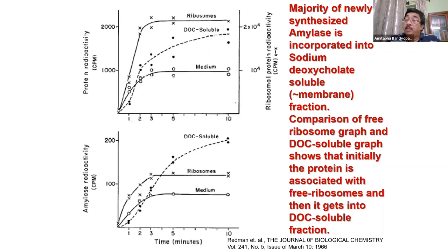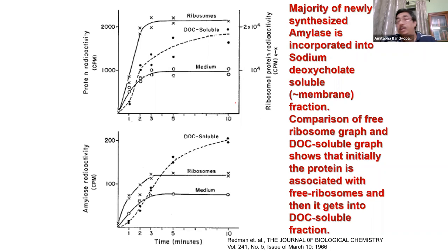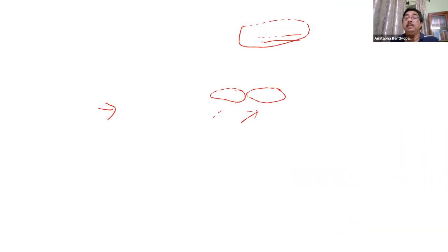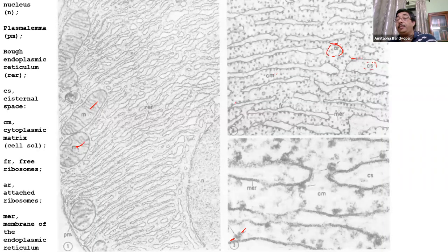He also figured out that proteins like chymotrypsinogen — those destined for secretion — get vectorially transported into the ER lumen, which is referred to as the CM compartment here. He knew that once the protein gets inside the endoplasmic reticulum, it cannot come out, but they are secreted outside of the cell. So the question became: how do they move?